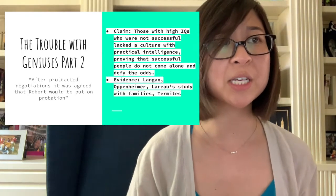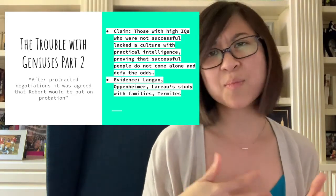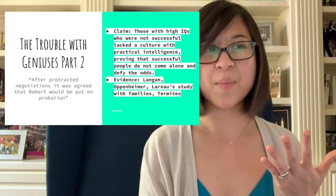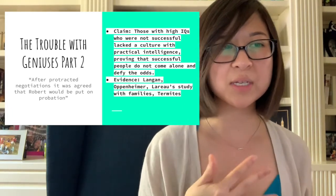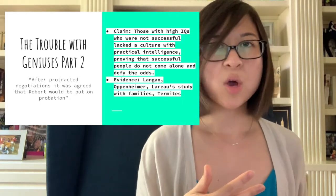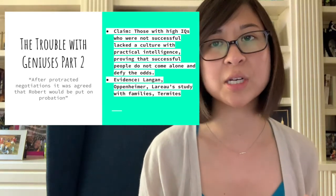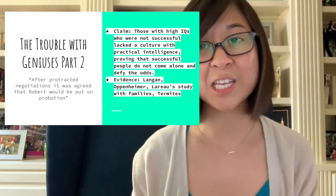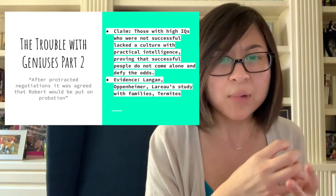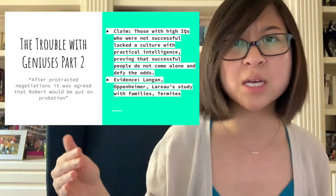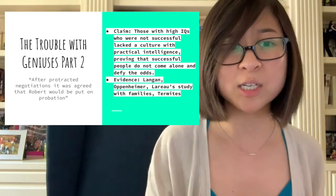Chapter 4 focuses on geniuses and builds on that. He makes note that just because you have a high IQ does not mean you are successful. It really matters whether you also have practical intelligence. Through his examples and studies he noticed that those with high IQs who were not successful lacked a culture of practical intelligence — they lacked a background where they were able to learn it. Make sure you find Gladwell's definition of practical intelligence in the book.